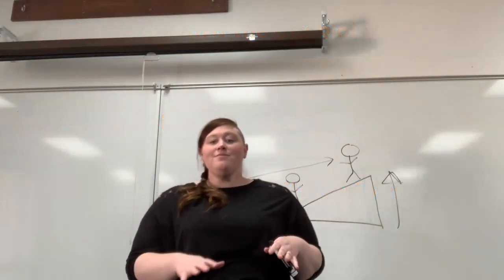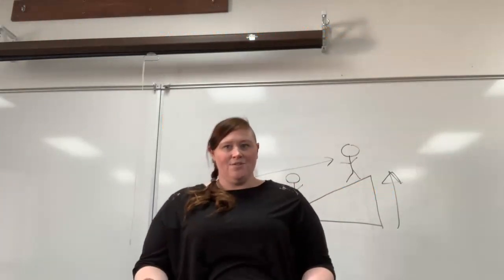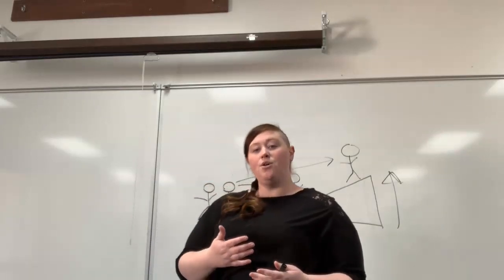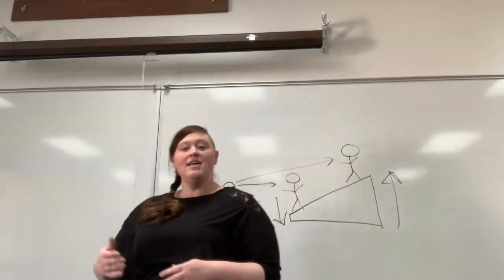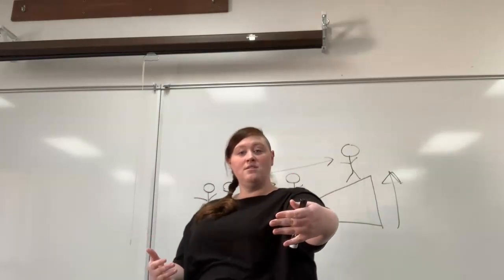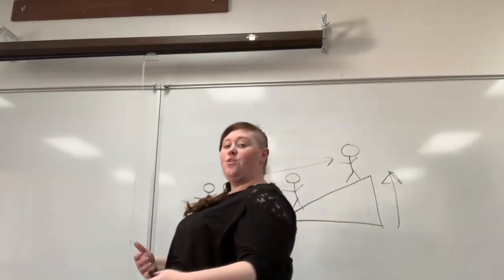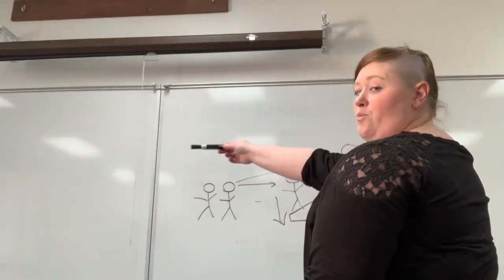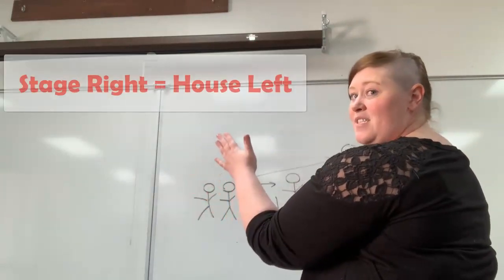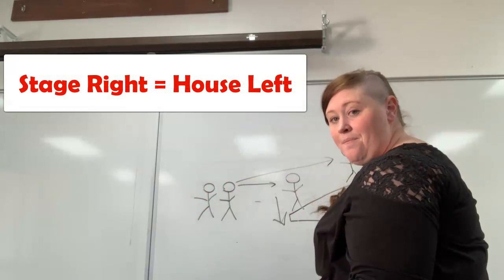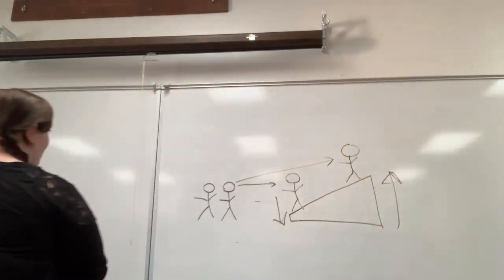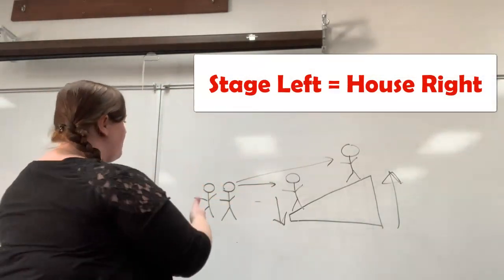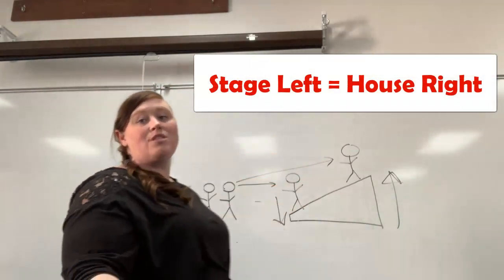Now let's say you're in the audience, and you see a performer go stage right. You're in the house, so you're looking at it this way. If a performer's going stage right, that's your left - that's house left. If a performer is going stage left, you as an audience member are watching them go to your right - it is house right.